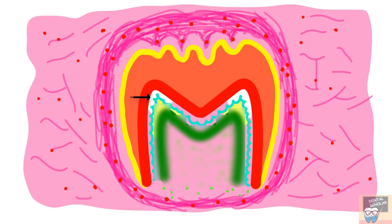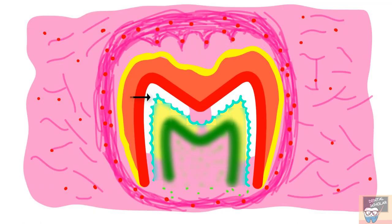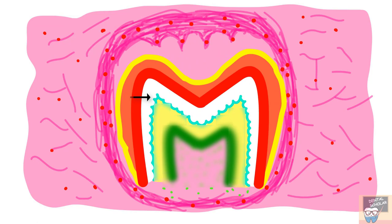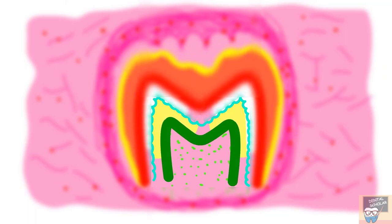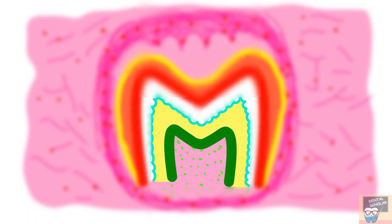The enamel forms from the cusp tip to the cervical margin and from the DEJ outward to the surface, while the dentine similarly forms from the cusp tip toward the cervical margin and from the DEJ inward toward the pulp.